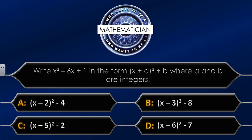Question nine: write x² minus 6x plus 1 in the form (x plus a)² plus b, where a and b are integers. The answers are: A equals (x minus 2)² minus 4; B equals (x minus 3)² minus 8; C equals (x minus 5)² minus 2; D equals (x minus 6)² minus 7. I'm going to give you 30 seconds starting now.